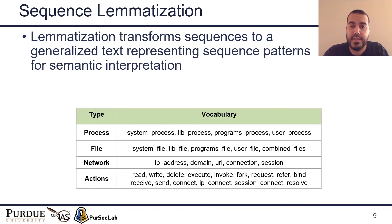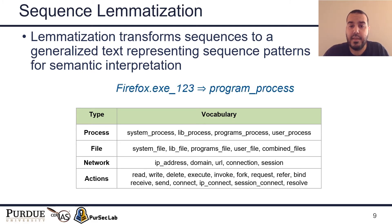In the sequence lemmatization component, ATLAS uses lemmatization, which is often applied in Natural Language Processing (NLP), to group different forms of a word as a single term. The benefit is that it represents a generic form of sequence semantics, making sequences easier to learn and identify for the learning model. For instance, the process name Firefox is abstracted to become 'program process.' The table on the slide represents the 30 words in audit logs that ATLAS abstracts using lemmatization. After abstracting sequences to semantic pattern sequences, ATLAS passes them to the learning model.